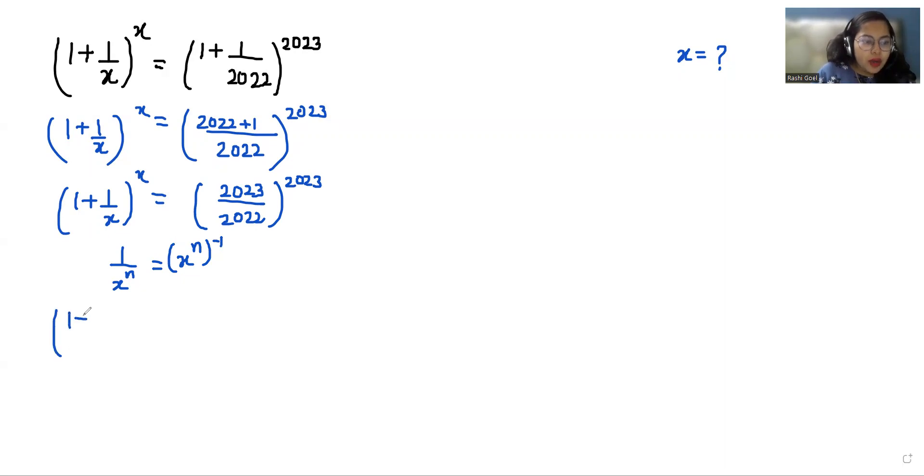So we can write it as (1 + 1/x)^x = (1/(2023/2022))^2023. If I'm using this identity, it becomes (1 + 1/x)^x = (2022/2023)^(-2023).